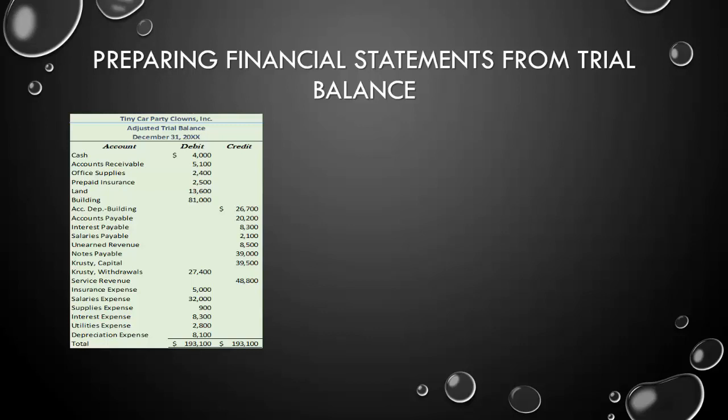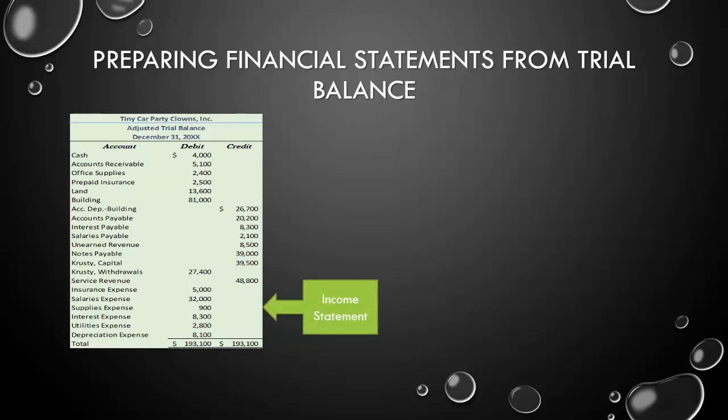What do we know about how the trial balance works to make financial statements? First, it has to be the adjusted trial balance. We always make our financials after we do our adjustments. The first financial that we are going to make is the income statement, which is going to use all of our revenue and expense accounts.